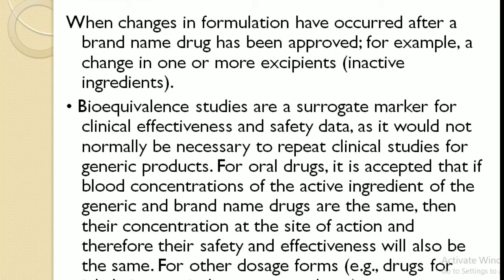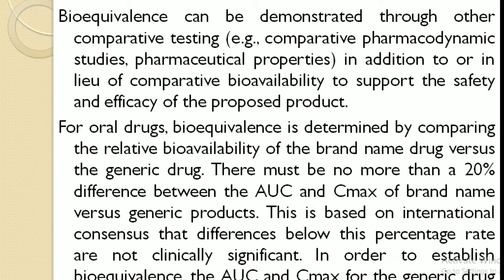For other dosage forms, such as drugs for inhalation, topical, or parenteral use, bioequivalence can be demonstrated through other comparative testing, for example comparative pharmacodynamic studies or pharmaceutical properties, in addition to or in lieu of comparative bioavailability. For oral drugs, bioequivalence is determined by comparing the relative bioavailability of the brand name drug versus the generic drug. There must be no more than 20% difference between the AUC and Cmax of the brand name versus generic products, as differences below this percentage are not considered clinically significant.